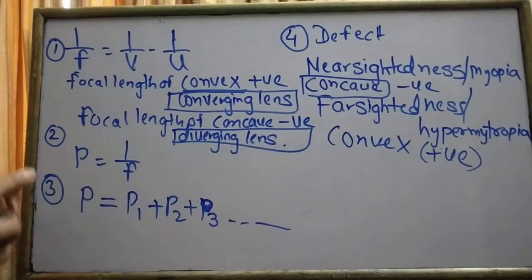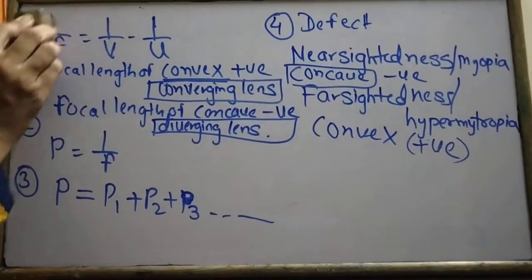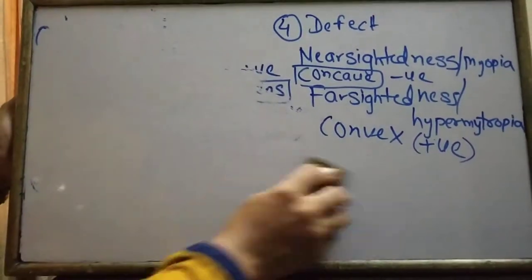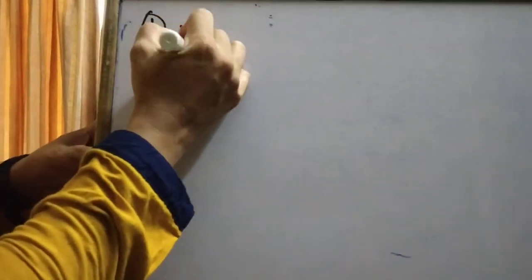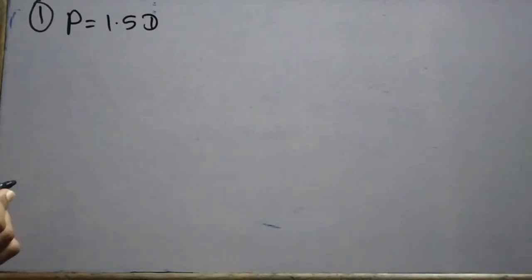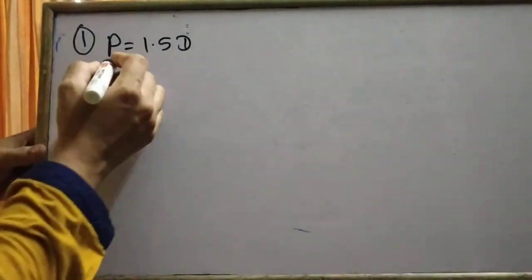Now let's start solving problems. The first problem: a doctor prescribes a lens having power of 1.5 diopters. What will be the focal length of the lens?